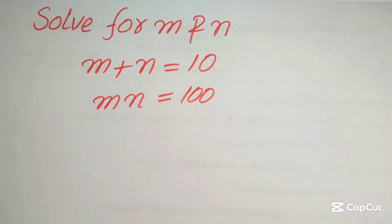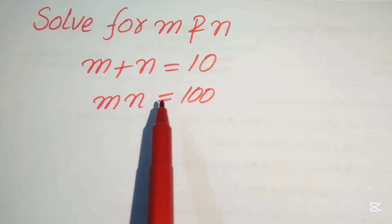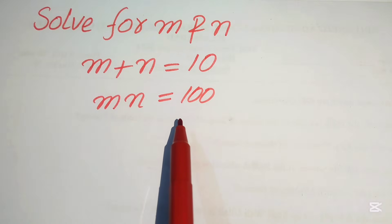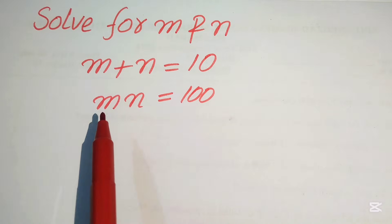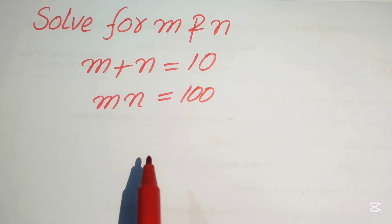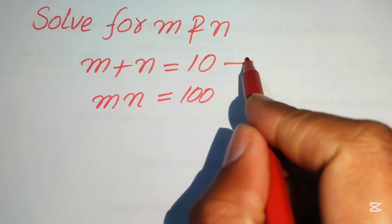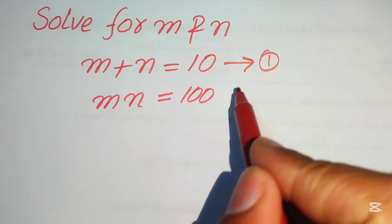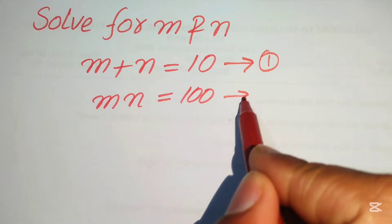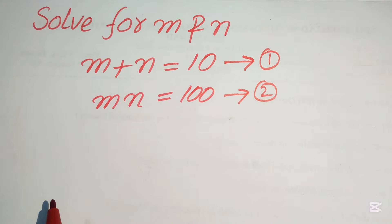Hello everyone, welcome to this algebra problem. We have m plus n equals 10, and mn equals 100. We call this equation number one and equation number two.